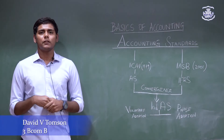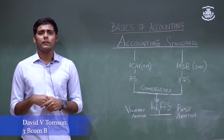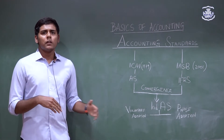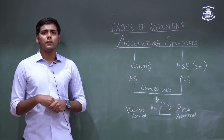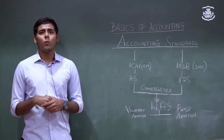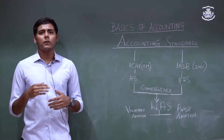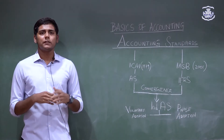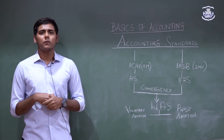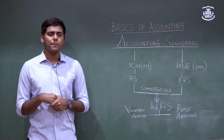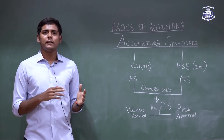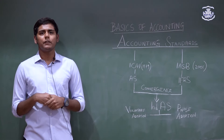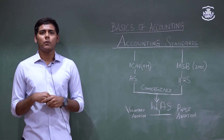Once the Indian Accounting Standards were formed, the Ministry of Corporate Affairs decided to start with voluntary adoption followed by a phase-by-phase adoption. Starting from the first of April 2015, any company could voluntarily adopt the Indian Accounting Standards, but once adopted, they could not go back. The phase-by-phase adoption consisted of four phases. Starting on the first of April 2016, Phase 1 required all listed and unlisted companies with a net worth of greater than or equal to 500 crores to mandatorily adopt the Indian Accounting Standards.